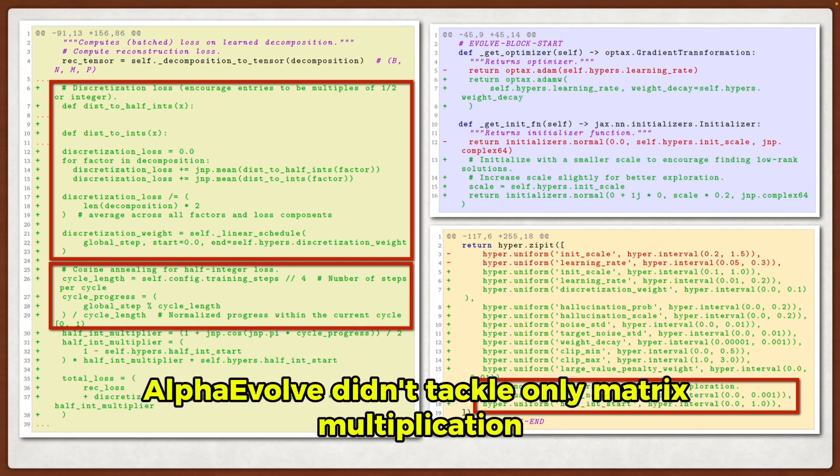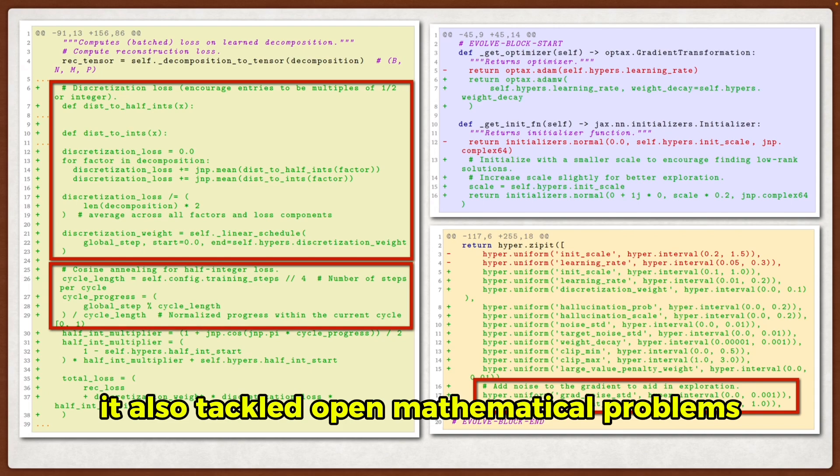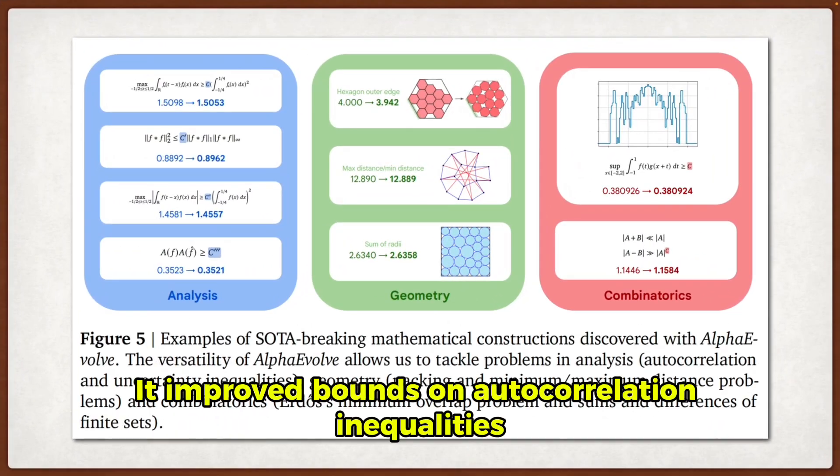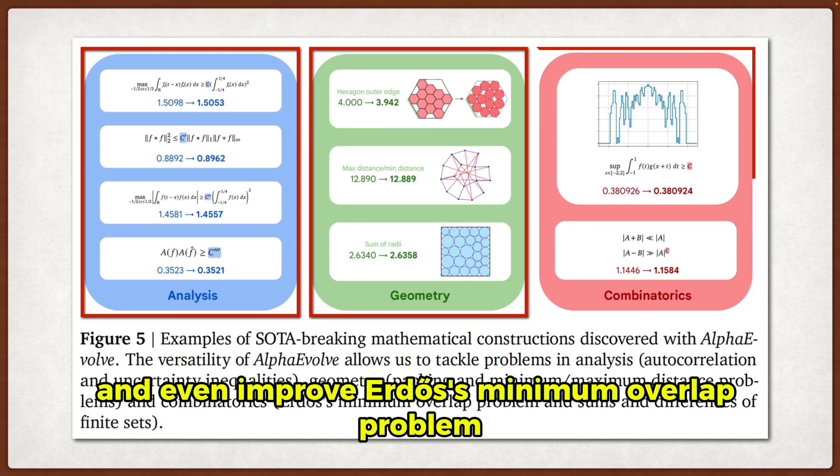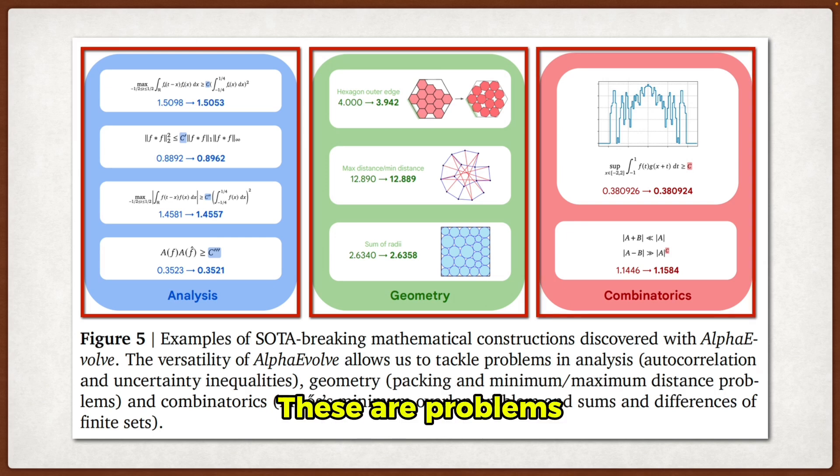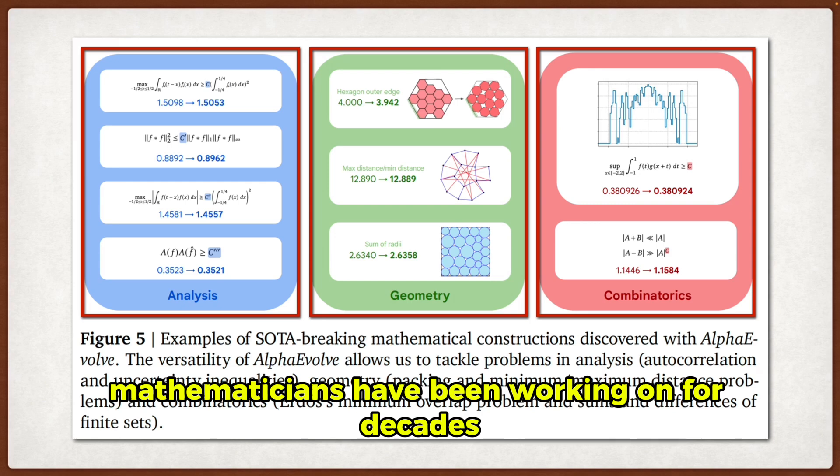And also, AlphaEvolve didn't tackle only matrix multiplication. It also tackled open mathematical problems. It improved bounds on autocorrelation inequalities, found better sphere packings for the kissing number problem in 11 dimensions, and even improved ERDOS minimum overlap problem. These are problems mathematicians have been working on for decades.